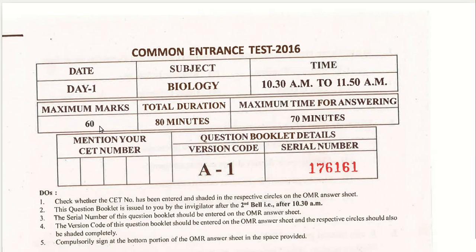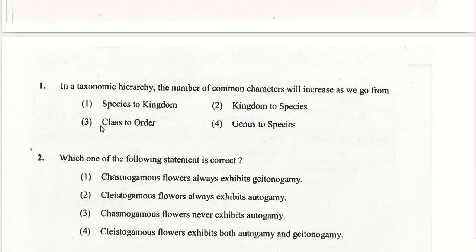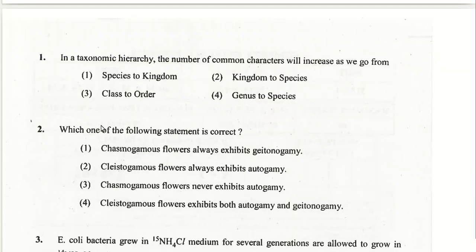In a taxonomic hierarchy, the number of common characters will increase as we go from kingdom to species. So more common characters will be maximum at species level and minimum at kingdom level.